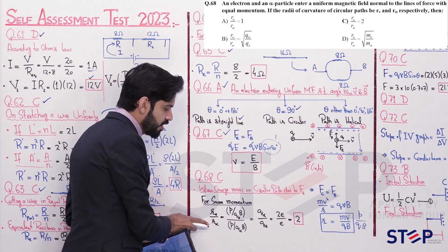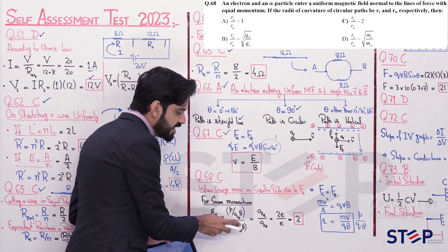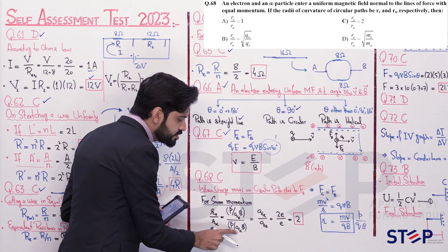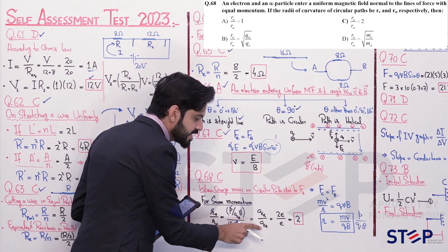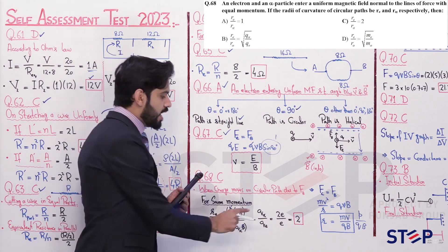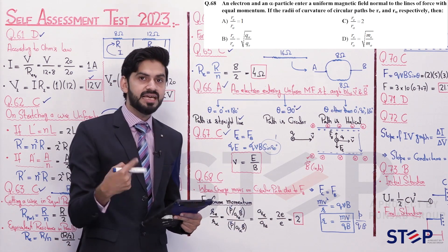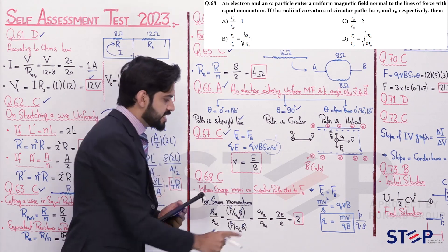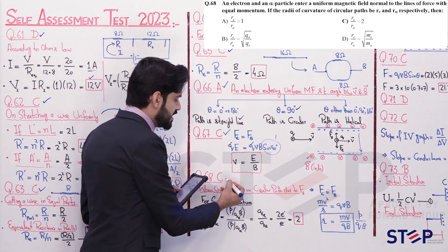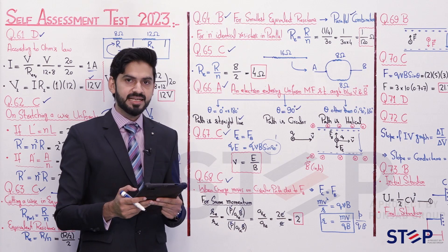Since momentum p is the same for both particles, r_e / r_alpha = q_alpha / q_e. The charge of an alpha particle is 2e (helium nucleus has two protons), and the electron's charge is e. So r_e / r_alpha = 2e / e = 2. Answer is option C. Question 68's answer is C.